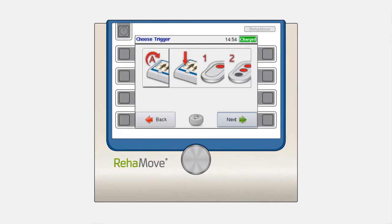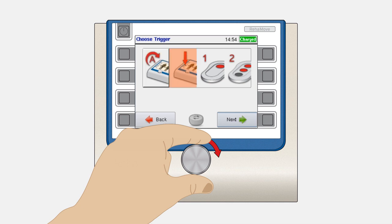By pressing the next button, you will be automatically forwarded to the trigger selection. Using the knob, you can select the trigger.